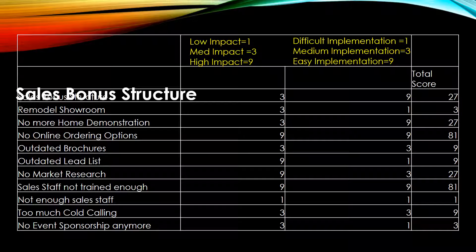Once you have it listed, you want to look at what is the impact of this item — how much impact does it have on that end result, how much does it impact having low sales? You want to score it using a 1, a 3, or a 9. 1 being low impact, 3 meaning medium impact, and 9 meaning very high impact. It's good to use 1, 3, or 9 because it's much easier, particularly in a group, to get consensus and categorize broadly as being either low, medium, or high impact.